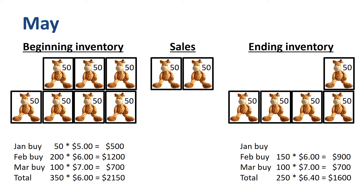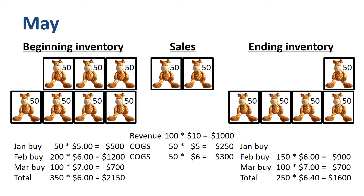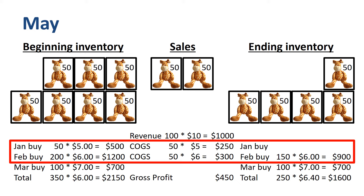If we prepare the income statement for May, revenue is 100 units times $10 is $1,000. Cost of goods sold, or COGS, is 50 units times $5 is $250, plus 50 units times $6 is $300, and gross profit is $450. Out of the remaining January buy that was part of the beginning inventory, we took all 50 units to COGS, and we took 50 units from the February buy into COGS. The remaining 150 units from the February buy go to the ending inventory.